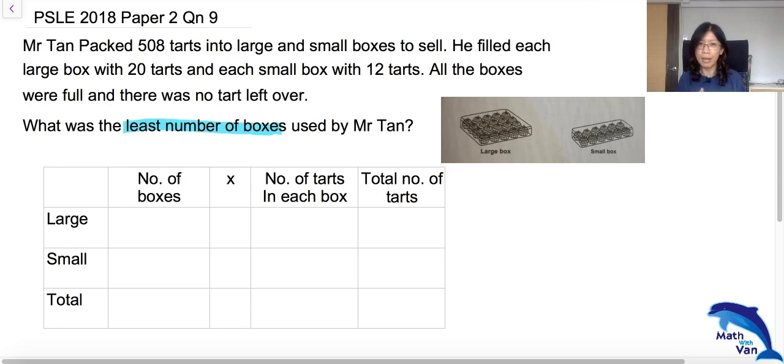But then I would only be left with 8 tarts, and this 8 tarts is not enough to fill the small box because the question has another condition that all the boxes were full and there was no tarts left over. That's the tricky part here. I want to make sure that I have the least number of boxes and yet all the boxes were full.